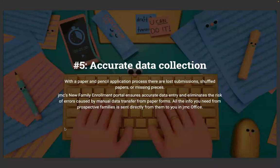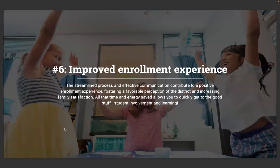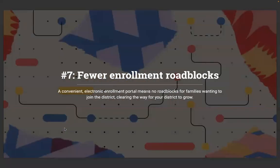Number five: accurate data collection. With a paper-pencil application process, there are lost submissions, shuffled papers, misplaced pieces, and illegible items. JMC's new family enrollment portal ensures accurate data entry and eliminates the risk of errors caused by manual data entry of paper forms. All of the info that you need from prospective families is sent directly from them to you in JMC office. Number six: improved enrollment experience. The streamlined process and effective communication contribute to a positive enrollment experience, fostering a favorable perception of the district and increasing family satisfaction. All the time and energy saved allows you to quickly get to the good stuff, which is student involvement and learning. And finally, number seven: fewer enrollment roadblocks. A convenient electronic enrollment portal means no roadblocks for families wanting to join the district, clearing the way for your district to grow.